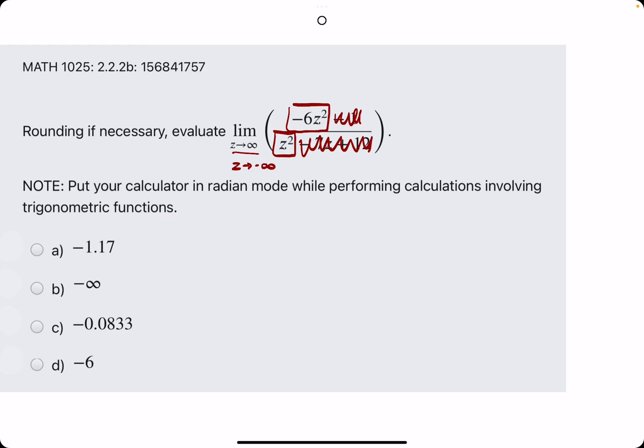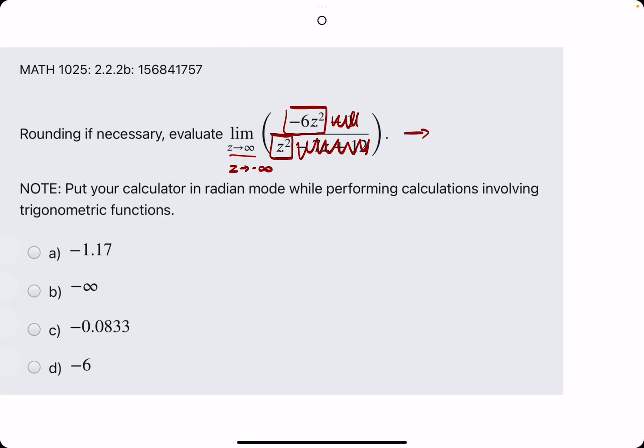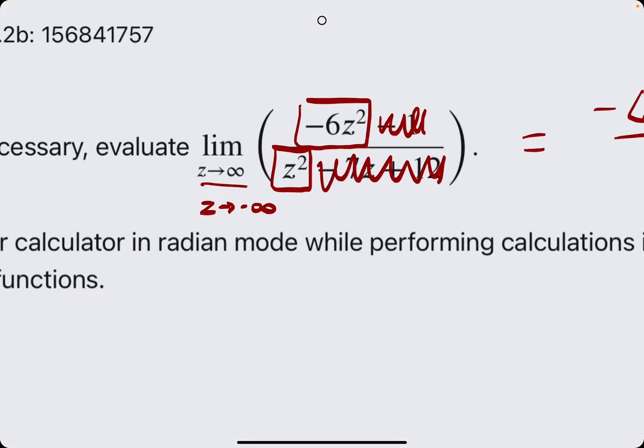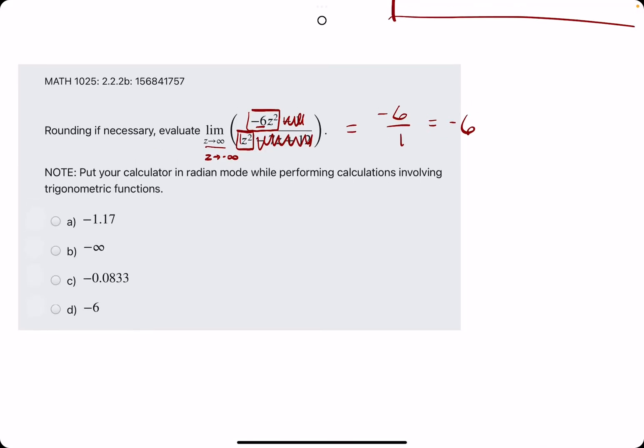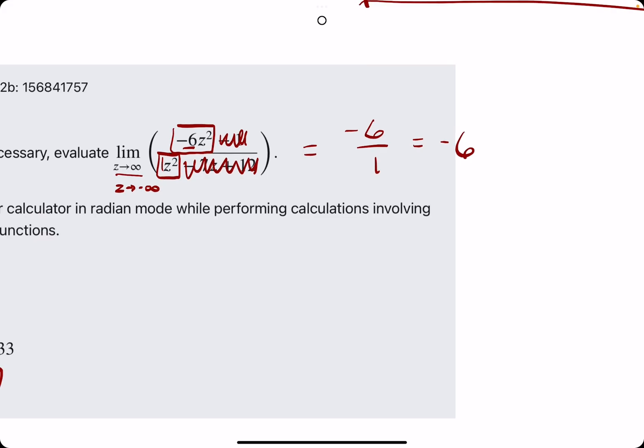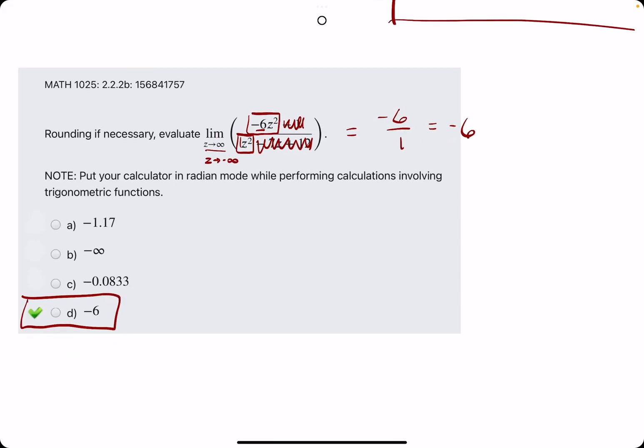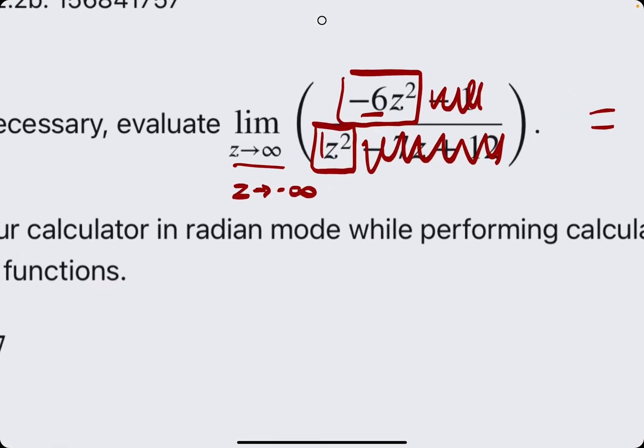What we'll do is say that this limit should approach or should be equal to the coefficients of these z squared terms over one another. Coefficient up here is negative six, coefficient down here is one. Negative six over one is negative six, and so negative six will be our answer. And you might remember these rules from finding horizontal asymptotes in the past. It's the same exact rules as finding limits as x or z goes to infinity.